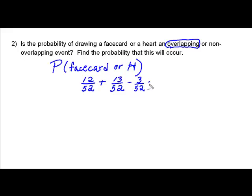Now we end up with 12 plus 13, which is 25, minus 3, which is 22 over 52. That is the probability of pulling a face card or a heart.